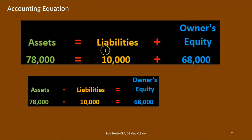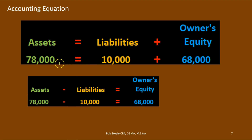The balance sheet contains assets, liabilities, and owner's equity — it is the double entry accounting system. It has all the components of the accounting equation: assets equal liabilities plus owner's equity. We can also write that equation algebraically three different ways. Subtracting liabilities from each side gives us assets minus liabilities equals owner's equity. This is useful because it tells us the book value — if a company has 78,000 and owes someone else 10,000, then owner's equity is 68,000, which is theoretically what the owner could walk away with if selling the business.